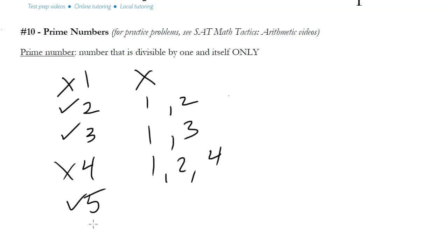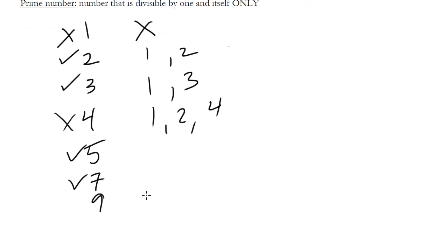5 is prime, 6 is not, 7 is prime, 8 is not, 9 is not. The first non-odd prime, right, because it's divisible by 1, 3 and 9, so that 3 makes it not prime and so on.